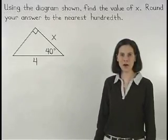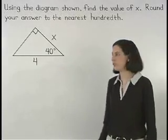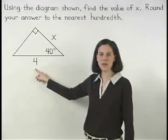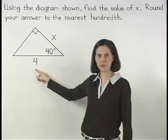Remember that the hypotenuse is always the side opposite the right angle, so our hypotenuse must be the side with a length of 4.